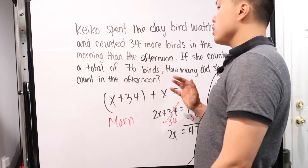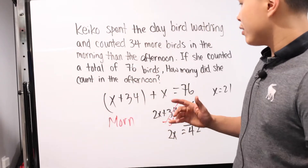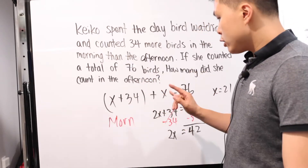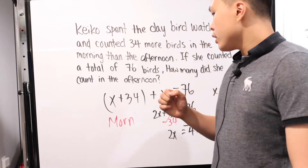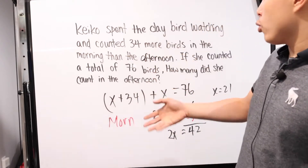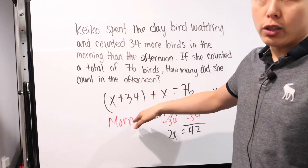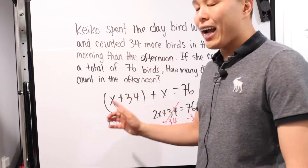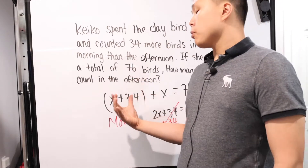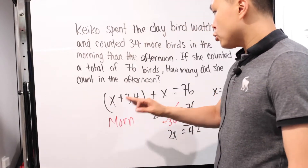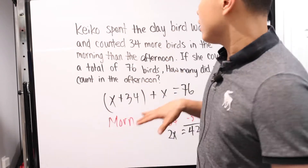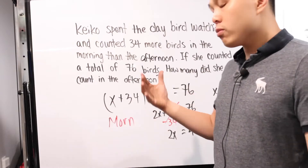The only thing that could potentially go wrong with a problem like this — besides not being able to set up the equation, which just takes practice — is making sure you know what you're focusing on. This one is nice because we made the variable represent the afternoon. If you decide to make X represent the morning instead, morning is 34 more, and now you have to subtract 34 and rewrite the problem. You can still solve it, but make sure you are answering the correct question. If the problem asks about the afternoon, focus on the afternoon. Whatever variable you use, make sure it represents what you're looking for, or convert accordingly.